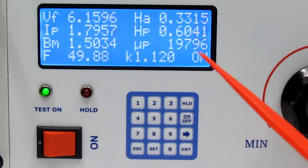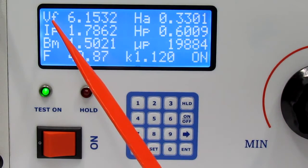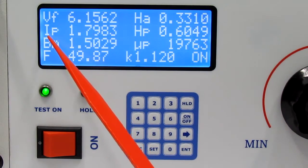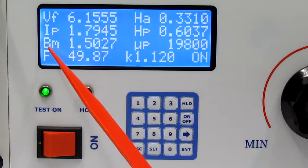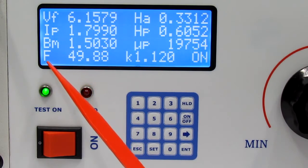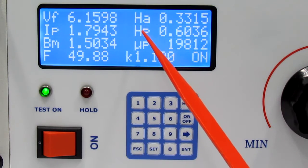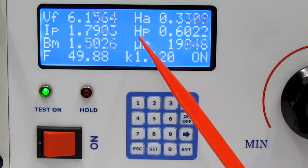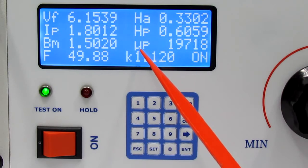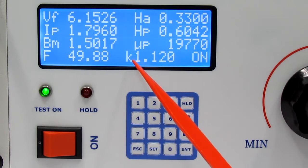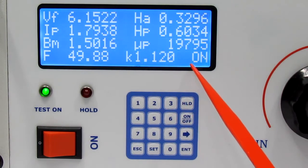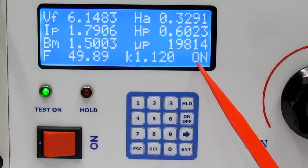Here you can see flux voltage VF, peak current IP, induction BM, frequency F, AC magnetizing force HA, peak magnetizing force HP, permeability mu P, form factor K, and status of an amplifier on or off.